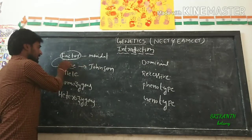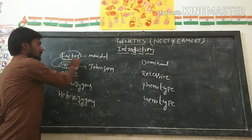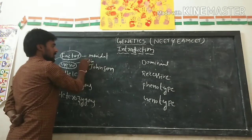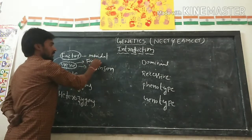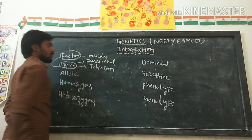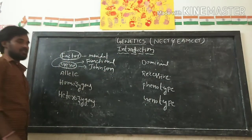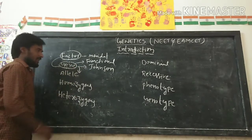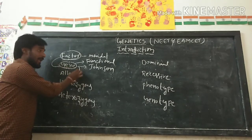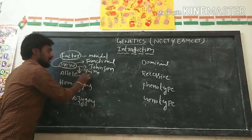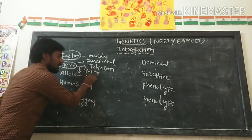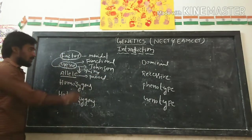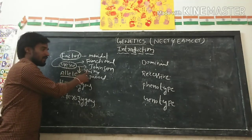The gene is the functional unit of genetics. The gene is the functional unit of genetics. Always the genes are in paired manner. The paired genes are called as alleles. The paired genes are called as alleles.